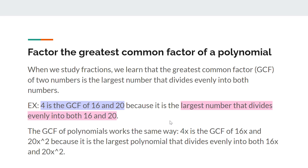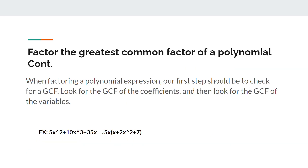4x is the GCF of 16x and 20x squared, because it is the largest polynomial that divides evenly into both 16x and 20x squared. When factoring a polynomial expression, our first step should be to check for a GCF: look for the GCF of the coefficients, then look for the GCF of the variables.